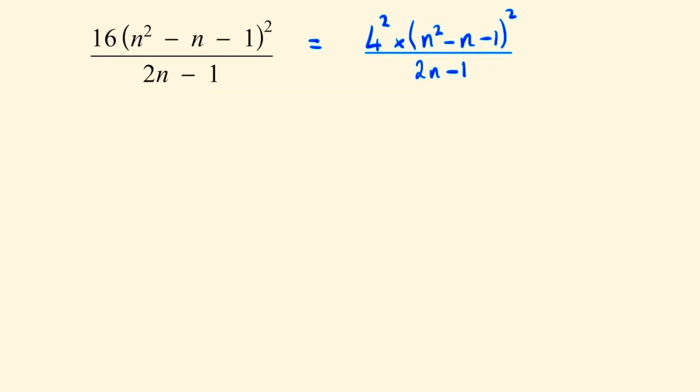To begin this problem we'll recognize that we can write 16 as 4 squared and so the numerator as the product of two squares. This allows us to write the numerator as 4 times n squared minus n minus 1 all squared over 2n minus 1. We can then distribute the 4 into the brackets to write it as 4n squared minus 4n minus 4 all squared divided by 2n minus 1.